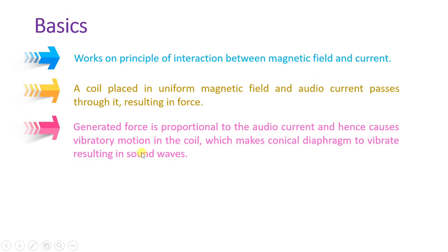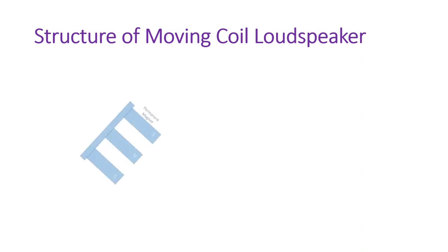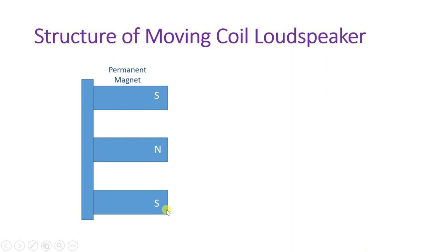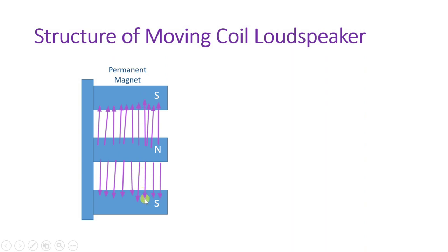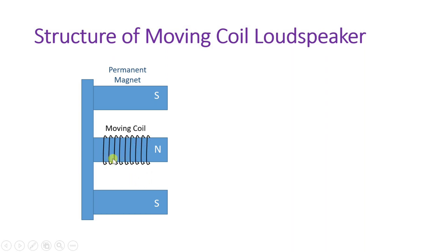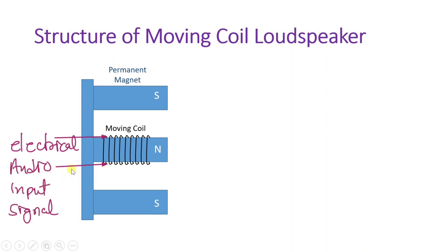Looking at the structure of the moving coil loudspeaker, it has a permanent magnet with an N pole and an S pole. Magnetic field emerges from the N pole and encloses to the S pole, creating a constant magnetic field. There is also a moving coil connected here, which is given the audio signal — an electrical audio signal is applied to this moving coil.